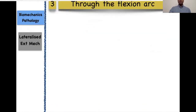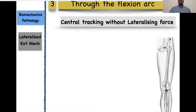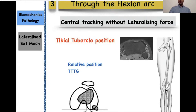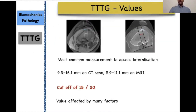As the patella tracks through the rest of flexion from 20-30 degrees to 80-100 degrees, it is important that it tracks centrally without any abnormal lateralizing force. This is dictated locally by the position of the tibial tubercle, and can be quantified on imaging with TTTG — tibial tubercle to trochlear groove distance. Various values in the literature suggest a cutoff of 15 to 20 mm, but anything more than 20 mm is probably abnormal.